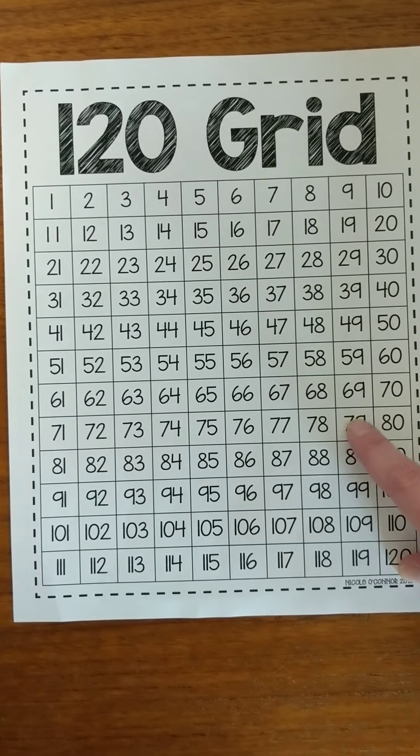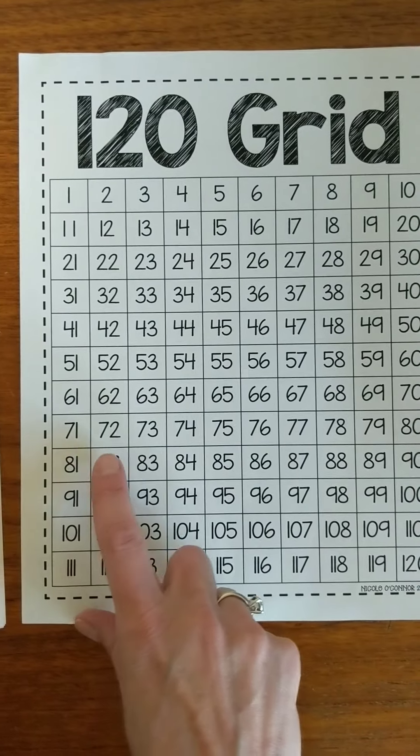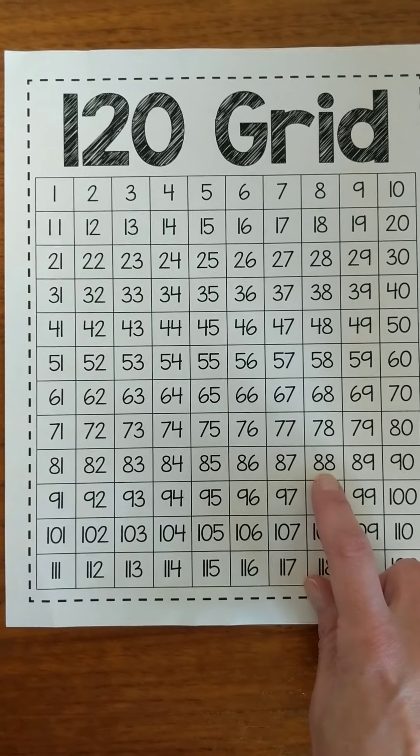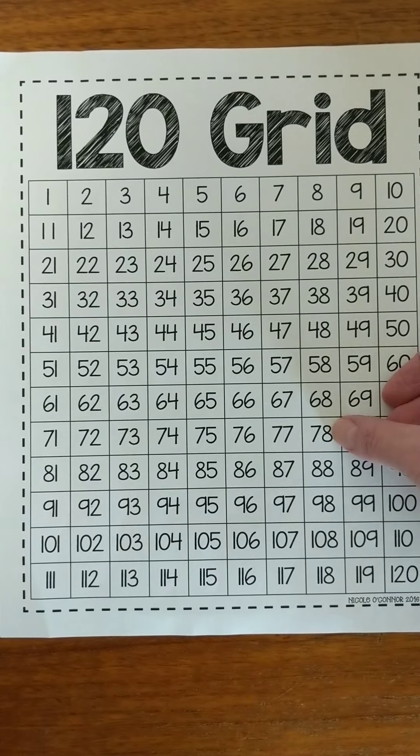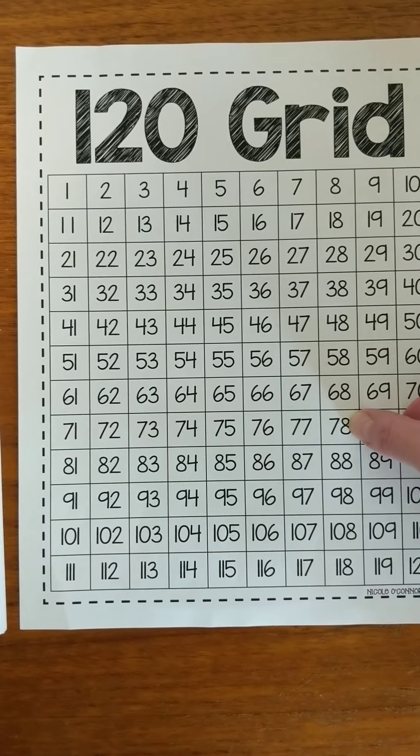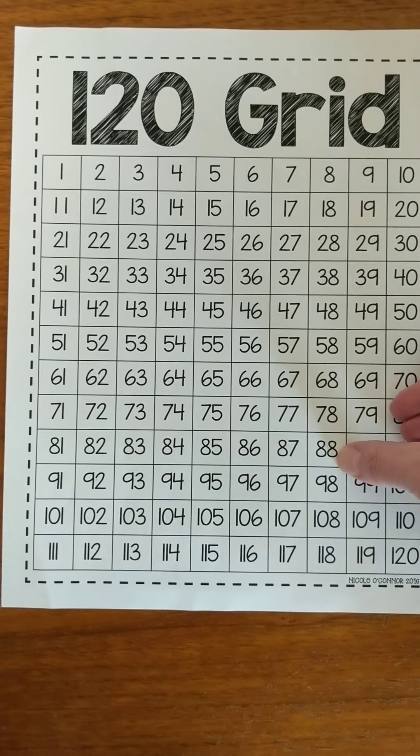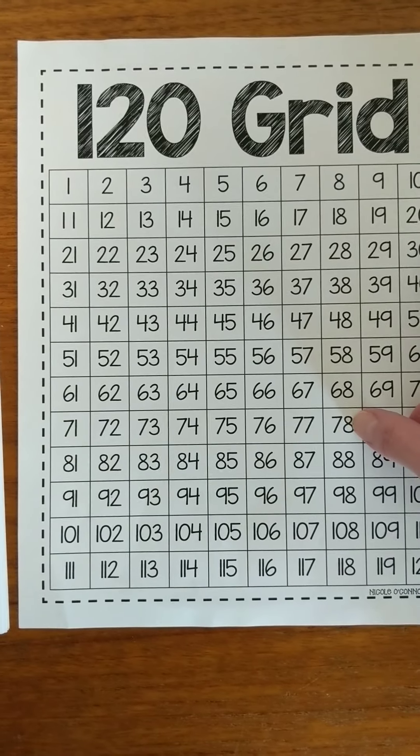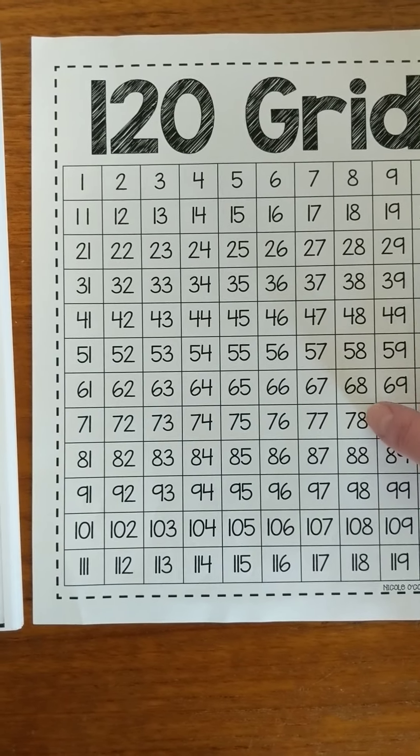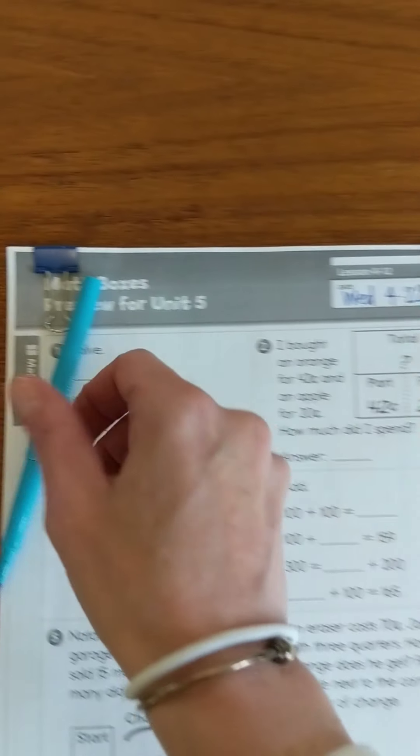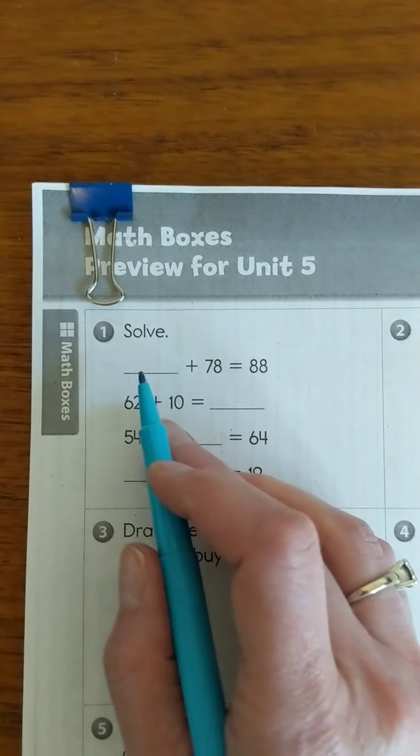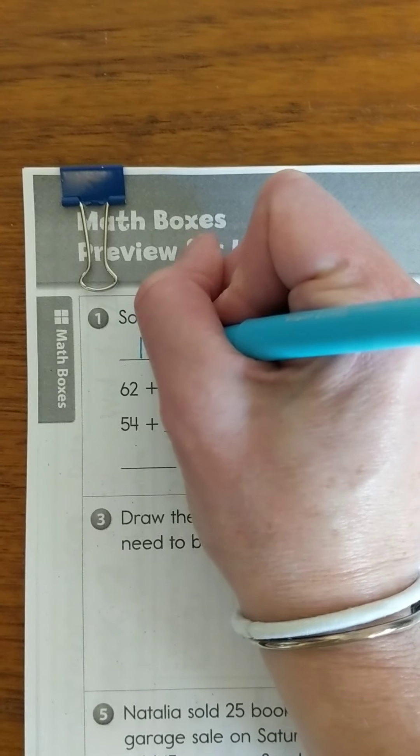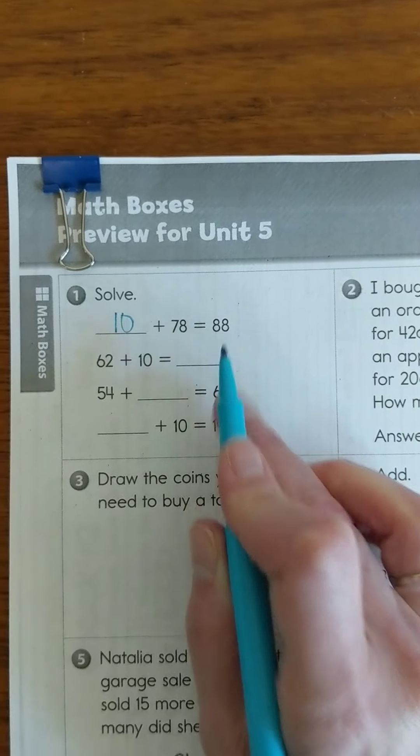If I'm at 78 and I need to get up to 88, I can count by ones one, two, three, four, five, six, seven, eight, nine, ten - I had to go up 10 to get to 88. Or when I look at 78, I know that to get to 88 I just need to jump down one row and each time I jump down one row I know that that is a jump of 10. So I know that I had 78 and I need to add 10 more and that will give me the 88 that I'm looking for.